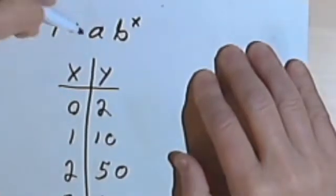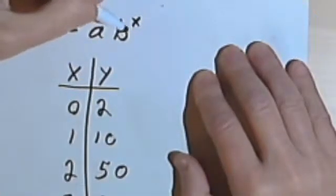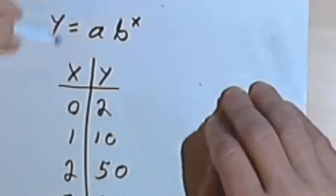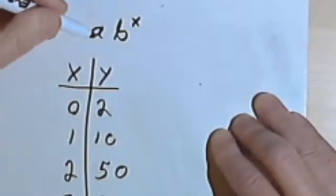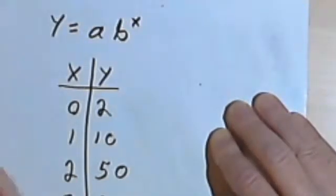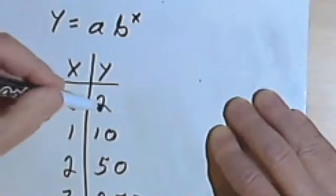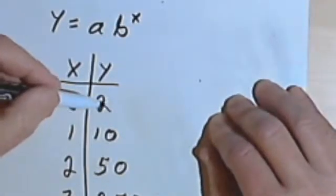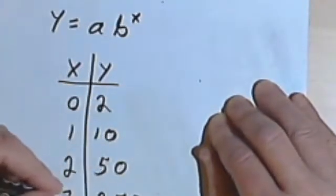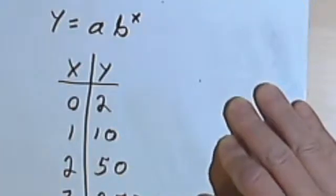Here we have y equals a times b to the x. Let's see if we can figure out what to do with that a. We're going to do the same procedure. I look at my table of values. The input column, the x column, is 0, 1, 2 and 3, so there's a common difference there. The output column has 2, 10, 50 and 250. I want to see if I can find a common ratio.